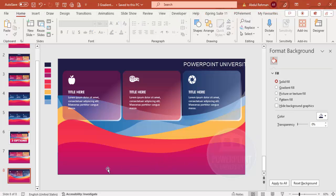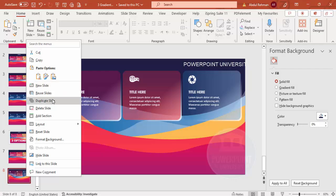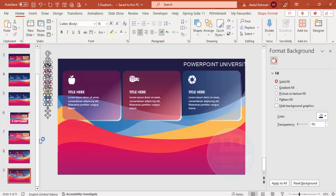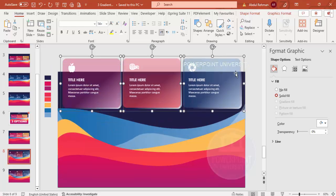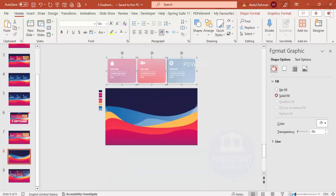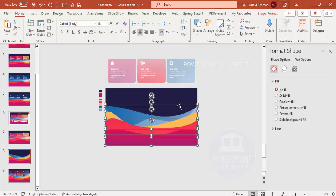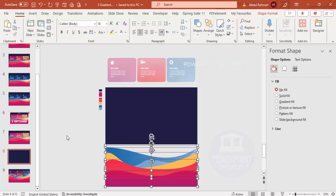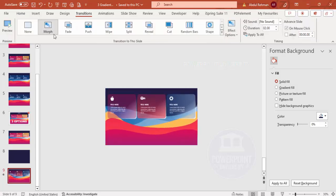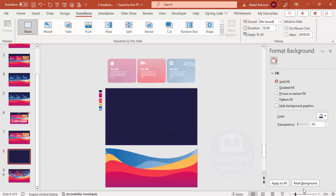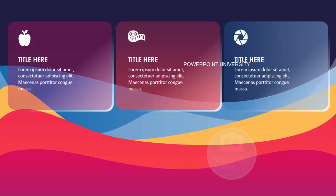For animation, duplicate the slide. On the first slide, move the option panels off-screen — some above and some below the slide area. On the duplicated slide, apply the Morph transition and set the duration to one second. When you click through, the panels smoothly animate into position.